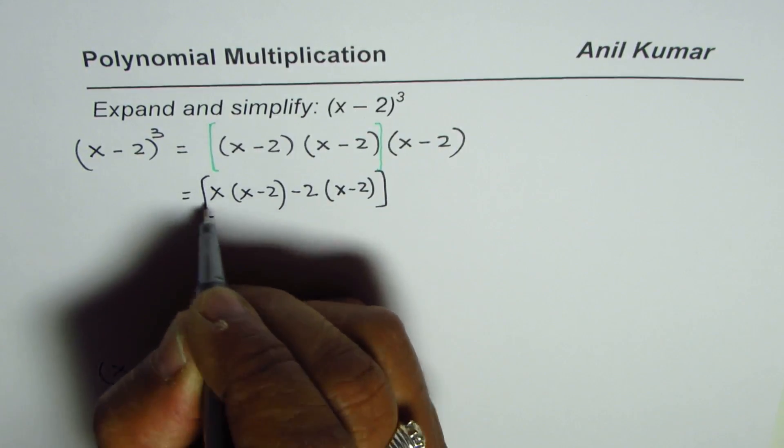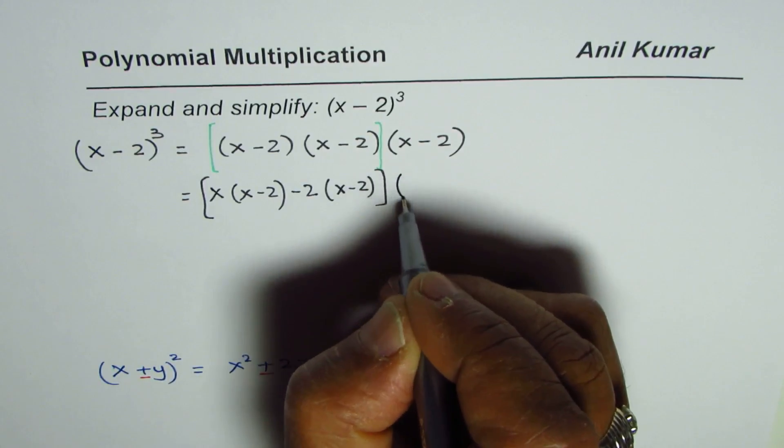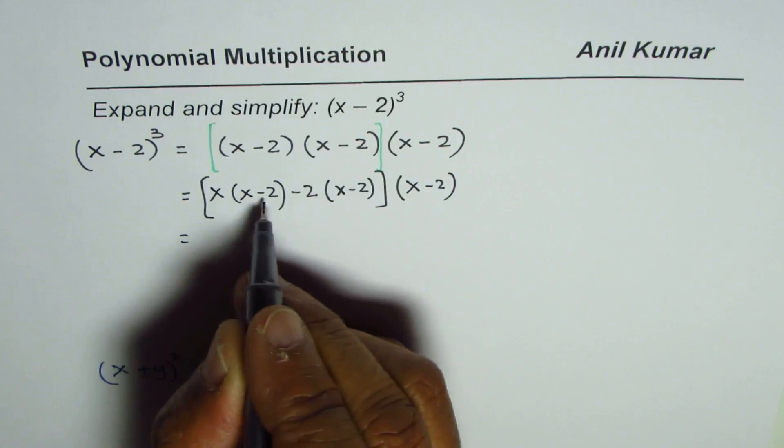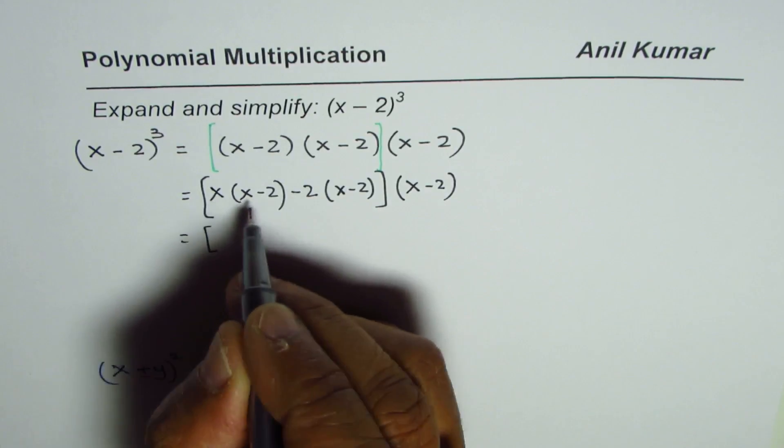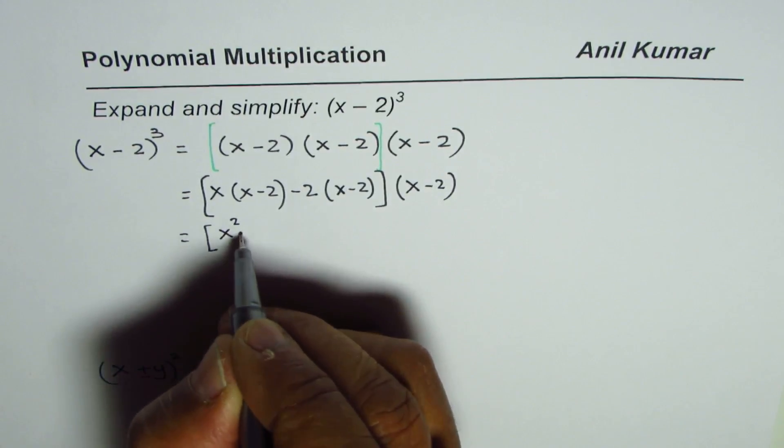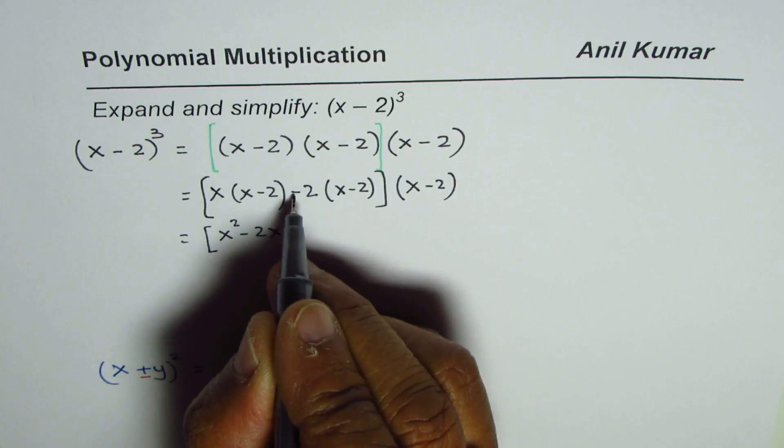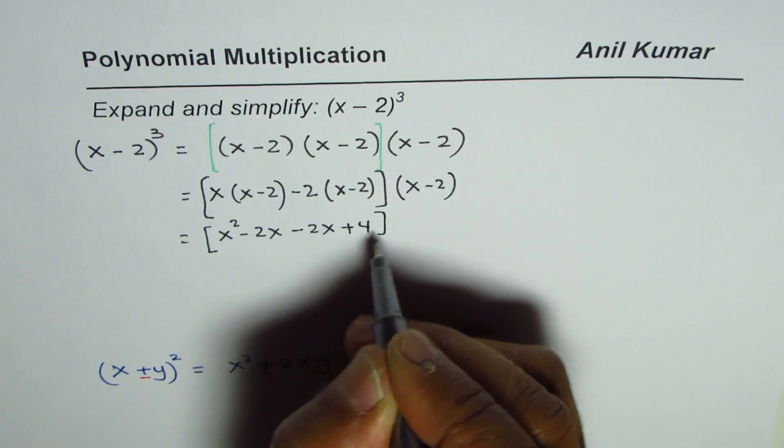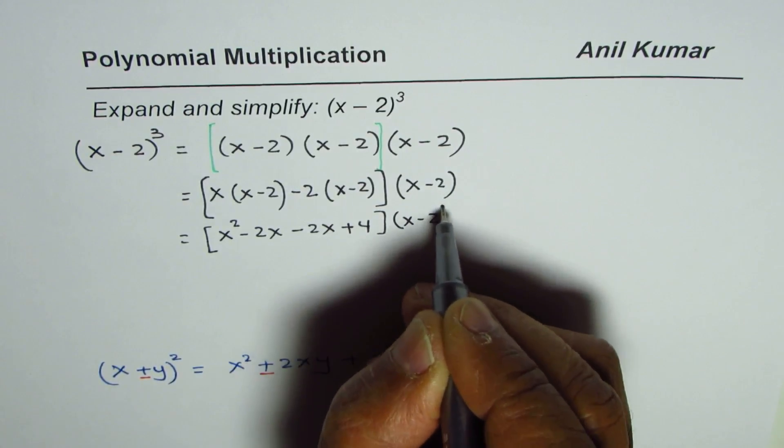So that is the part which we will do first. And then whatever we get, we will multiply that by x minus 2. Now, let me write them as square brackets: x square minus 2x, multiplying by minus 2 gives you minus 2x, minus minus is plus 4. Times x minus 2.